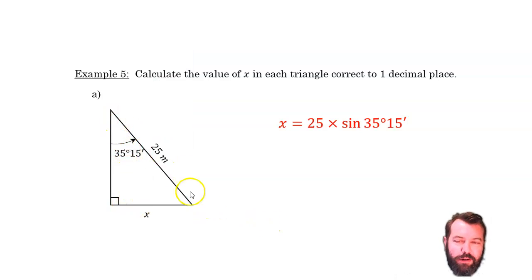Equals 14.4 to one decimal place. And a quick look, that looks about right. It's got to be less than 25, because 25 is the hypotenuse, it's got to be the longest side. So here we go. x is 14.4 metres.